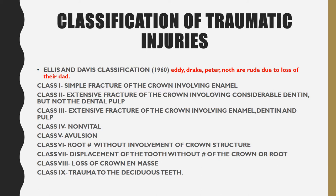Here is a mnemonic to remember this classification: 'Eddie Drake Peter North — they are rude due to the loss of their dad.' Eddie = enamel (Class 1), Drake = enamel and dentine (Class 2), Peter = pulp (Class 3), North = non-vital (Class 4), R = rude = avulsion (Class 5), A = root fracture (Class 6), due = displacement (Class 7), loss = loss of crown (Class 8), dad = deciduous teeth (Class 9).